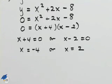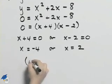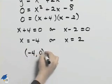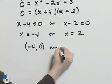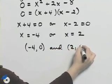So the points that are x intercepts are negative 4, 0 and 2, 0.